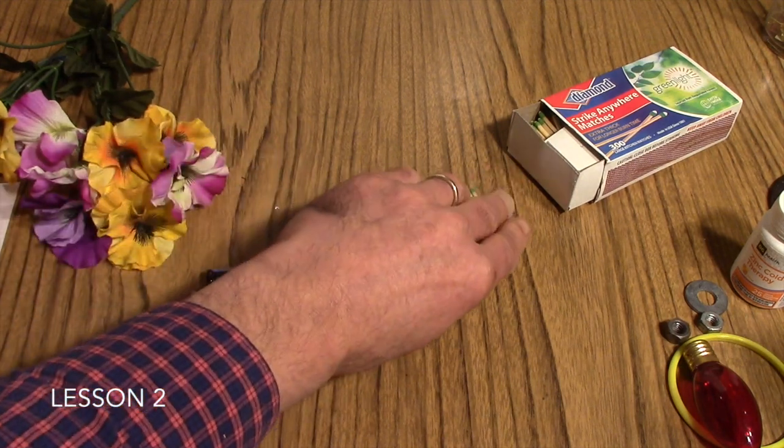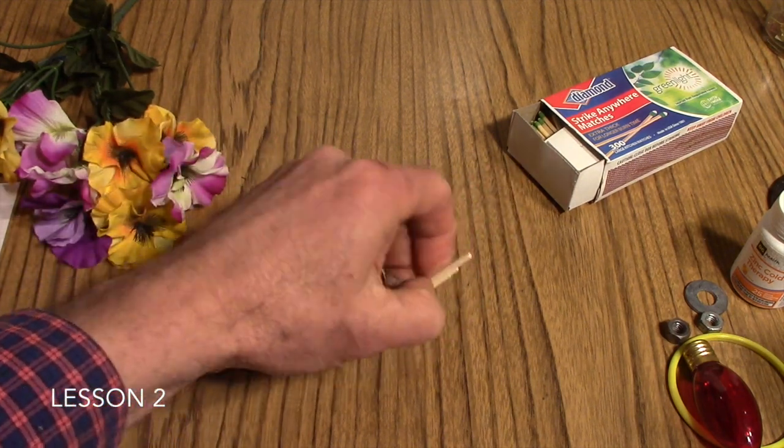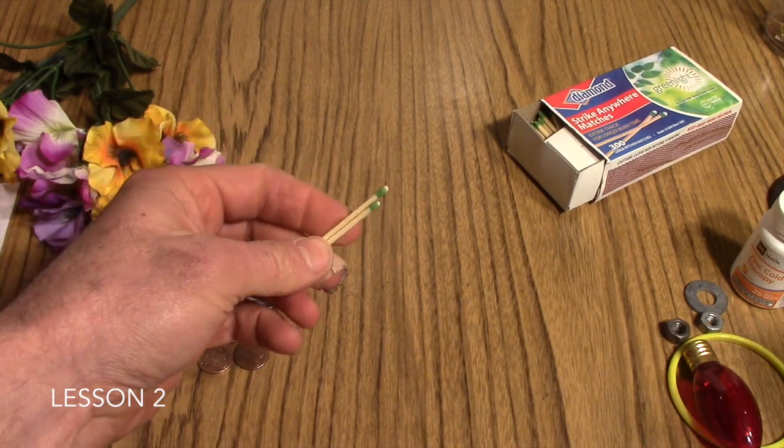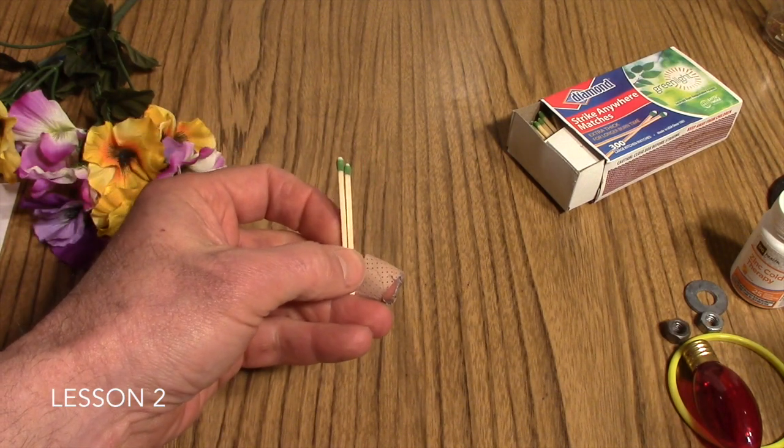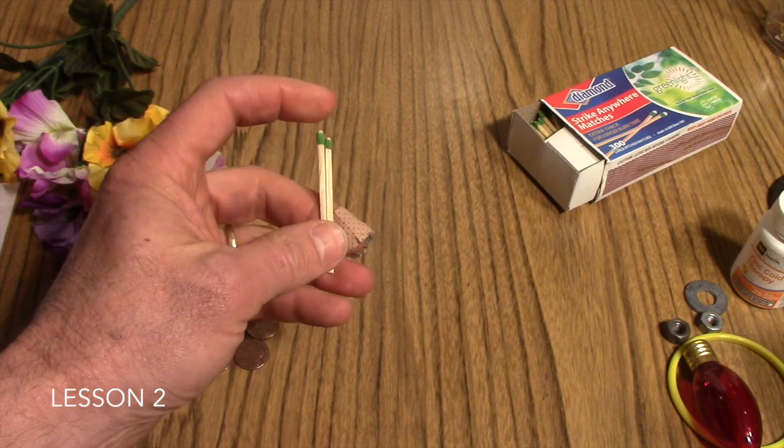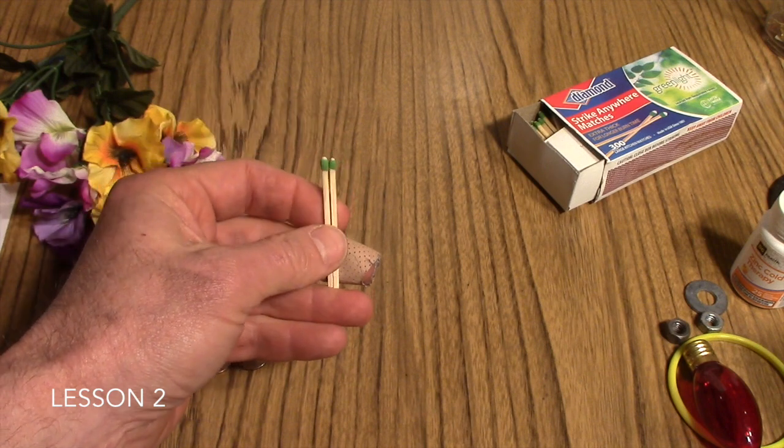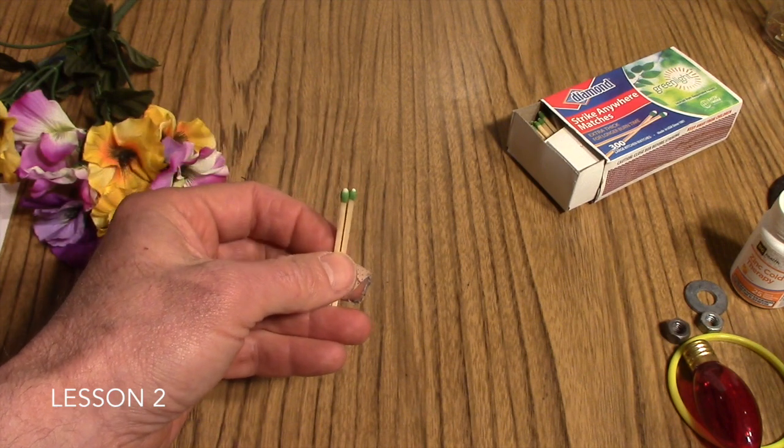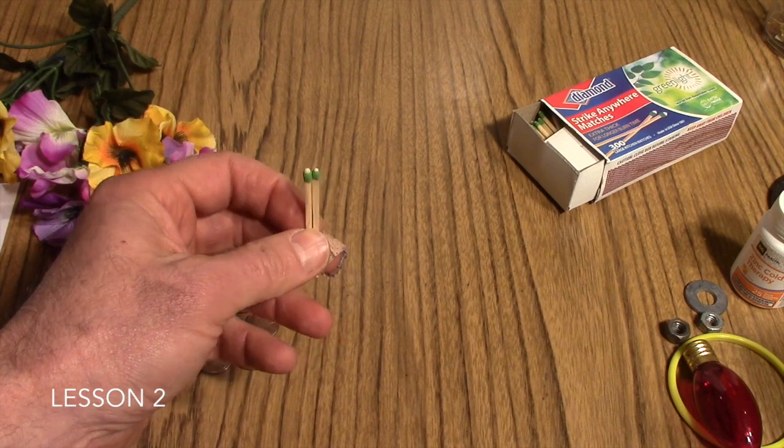Another example would be found in matches here. The compounds on the end of a match are made of phosphorus. So a student who had his birthday on the 15th of the month could utilize matches.